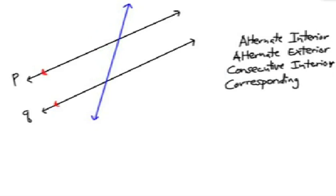And finally, corresponding angles. If I put a triangle next to the corresponding angles, there are four pairs of them. Let's find out where they are. If I am looking at that angle right there, what is its corresponding angle pair? Remember, they are congruent to each other.